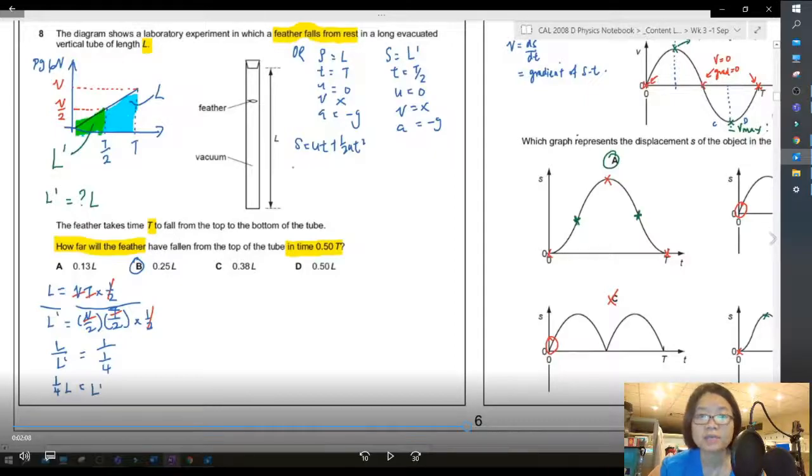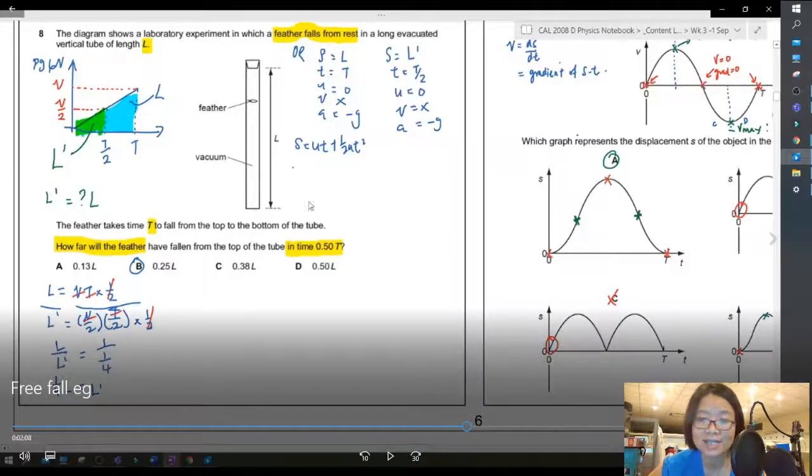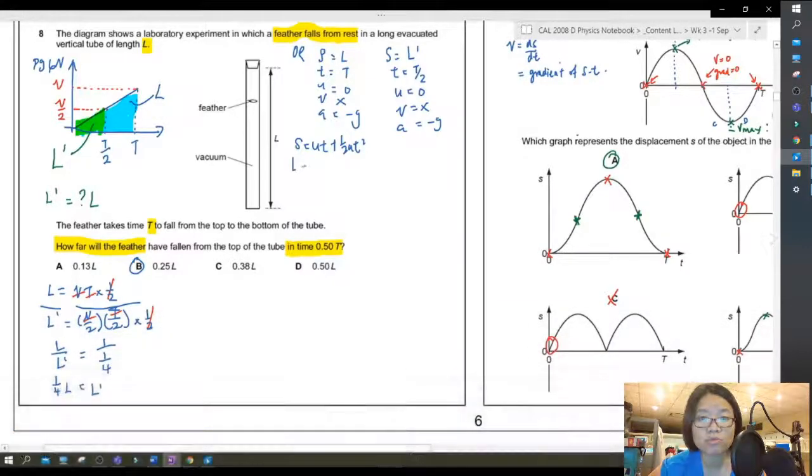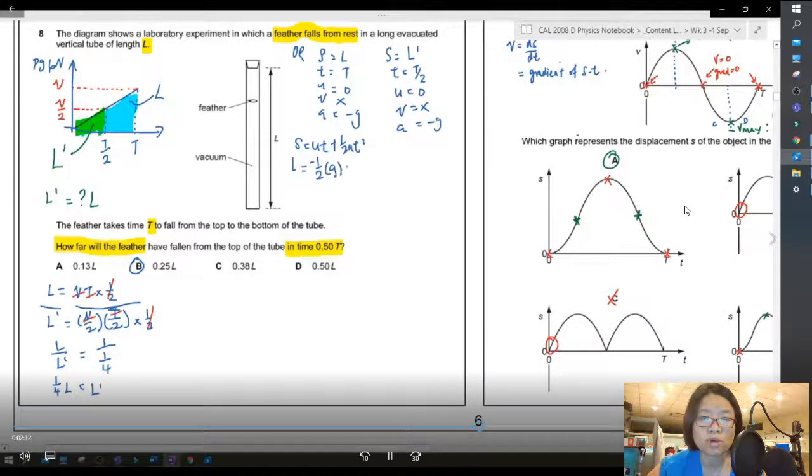For half the time, then this will be L prime. Since the feather is dropping from initial speed zero, so this one u will be equal to zero, u will be equal to zero. We don't really care about the final velocity. It's not our concern in this question and the acceleration is as usual, the acceleration of gravity. So we can form two equations, okay? So I use s is ut plus half a t square.